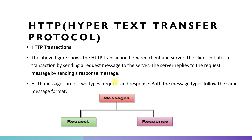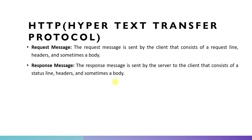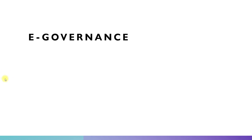HTTP messages are of two types: request and response. Both message types follow the same message format. The request message is sent by the client and consists of a request line, header, and sometimes a body. The response message is sent by the server to the client and consists of a status line, header, and sometimes a body.